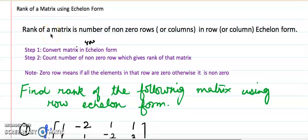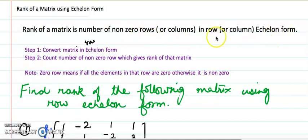Hello everyone. In this video I am going to discuss how to find the rank of a matrix using echelon form. The rank of a matrix is the number of non-zero rows in a row echelon form. It can also be discussed in column form by converting it into column echelon form, but in this discussion I will focus on the row echelon form.